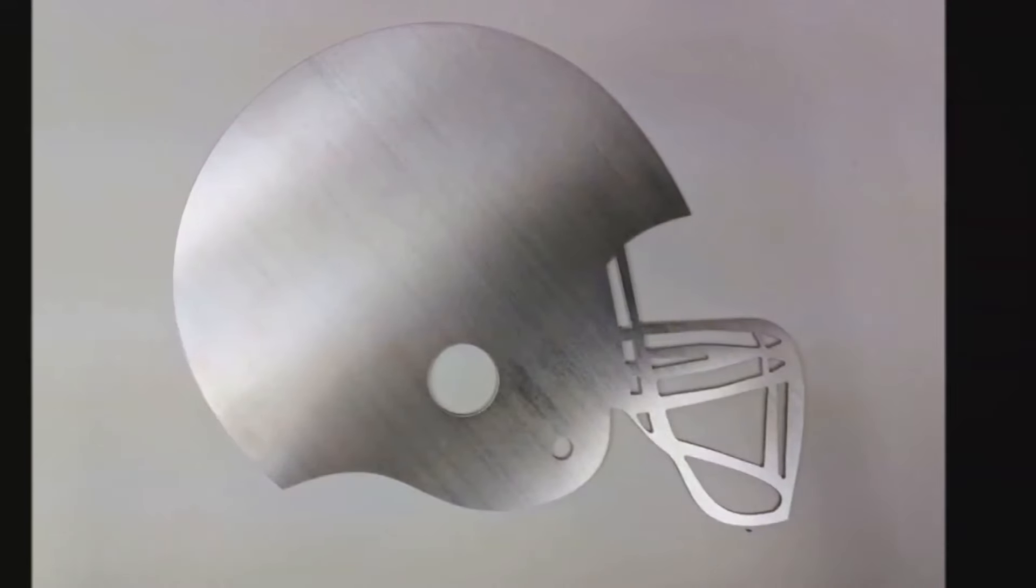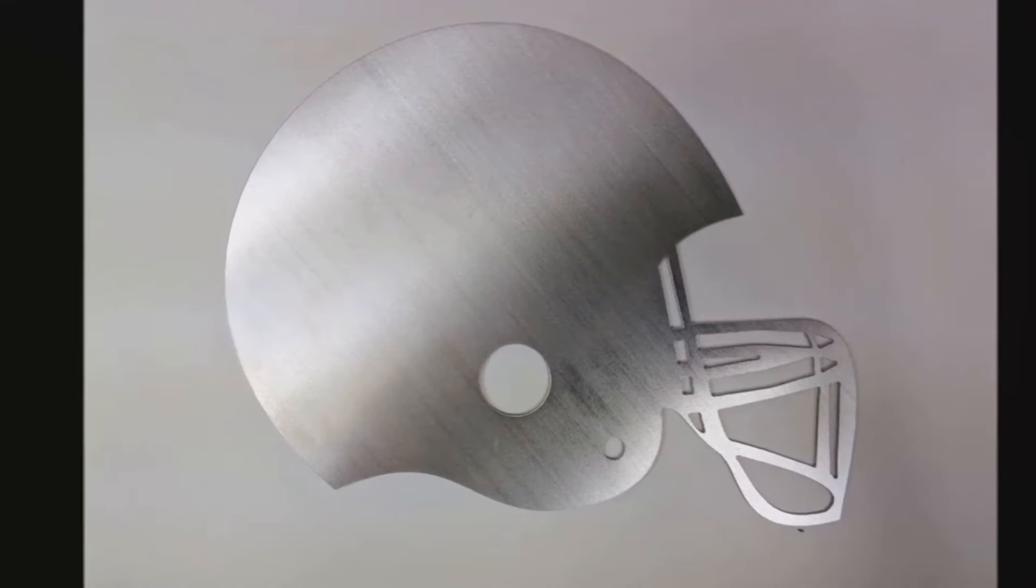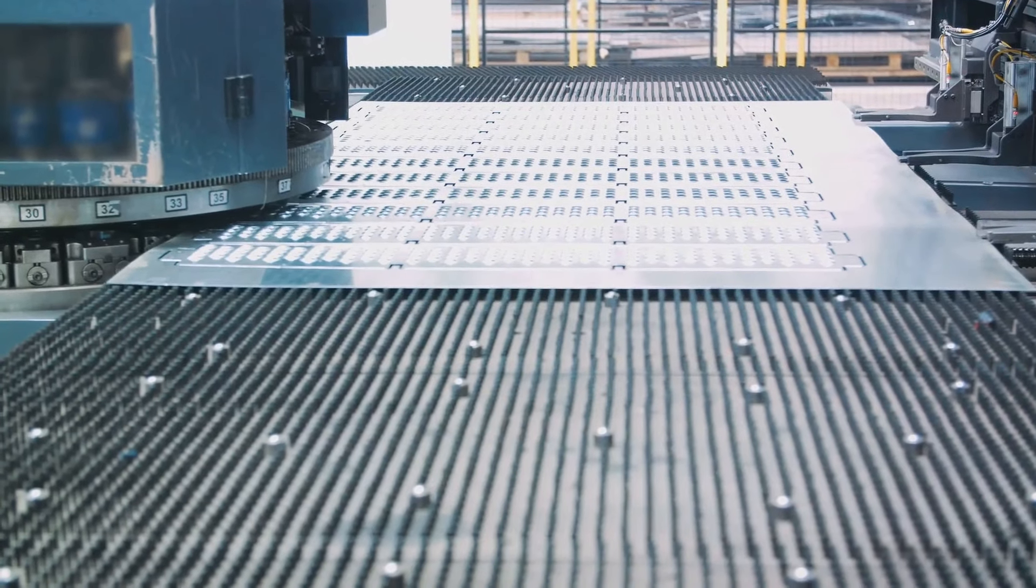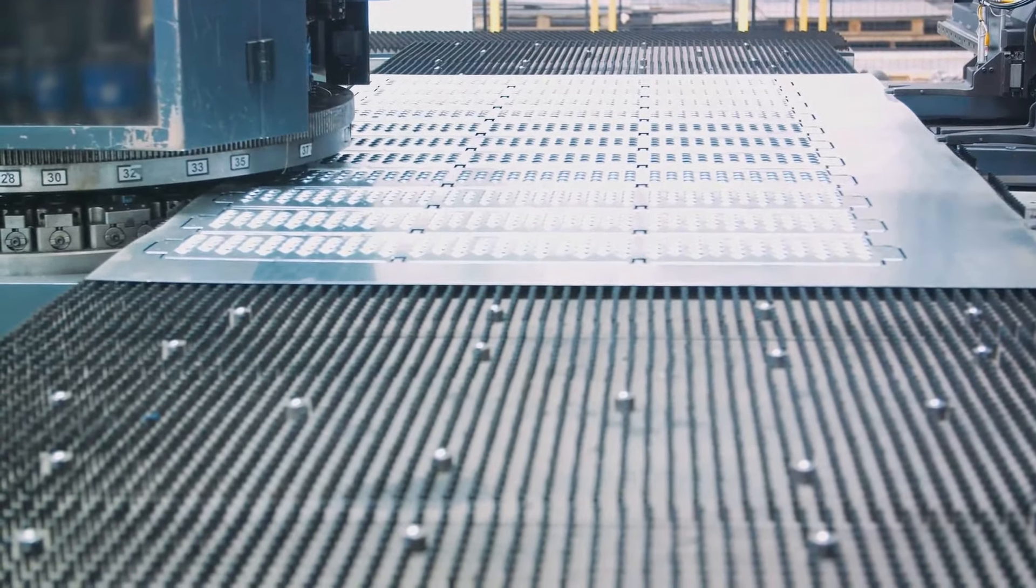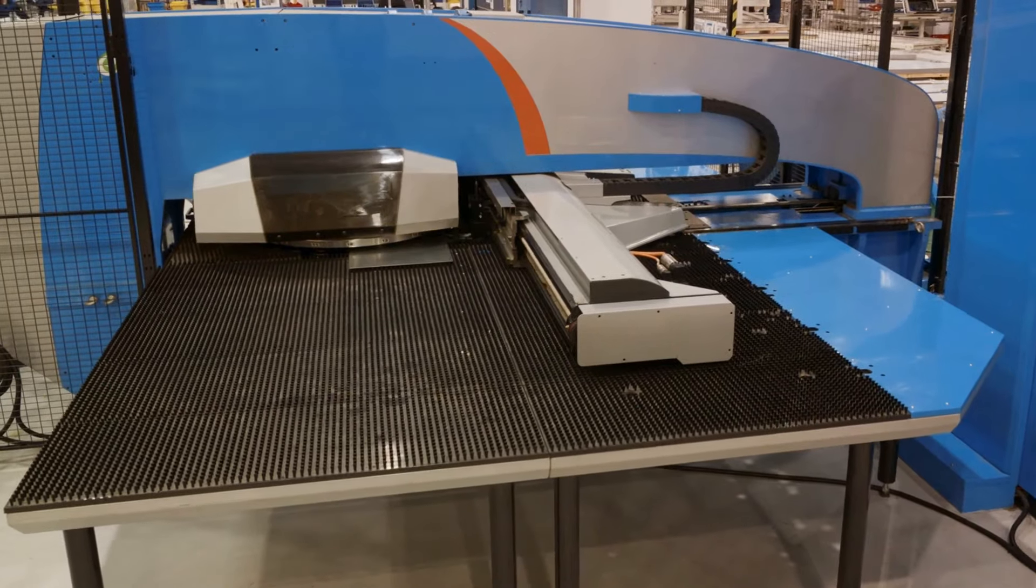Waterjet cutting, on the other hand, employs a high-pressure stream of water, demonstrating that even the softest compound can carve its path through the toughest material. Punching and pen insertion follow suit, creating precise holes and fastening points in the metal sheet.